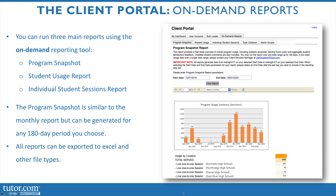You'll also be able to run on-demand reports, and this includes the program snapshot report, student usage report, and individual student sessions report. The program snapshot report will be most similar to the monthly report, but you can generate it for your own date range, so it doesn't just have to be one month at a time. This is a great report if you just want to compare month-to-month usage.